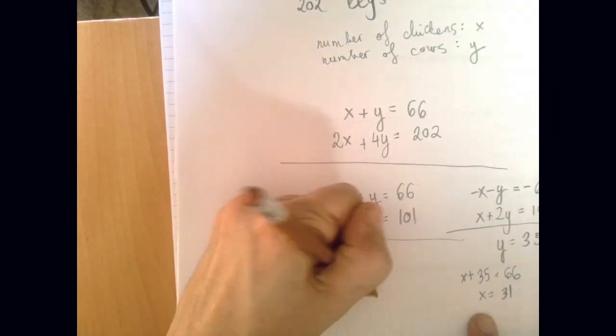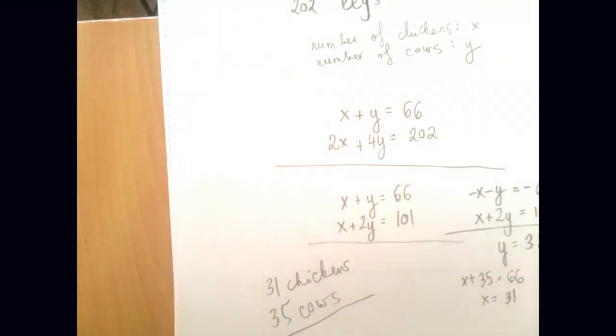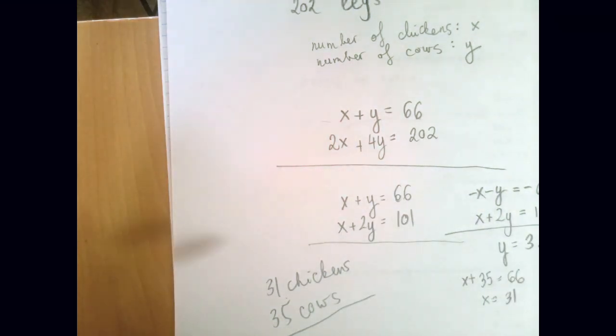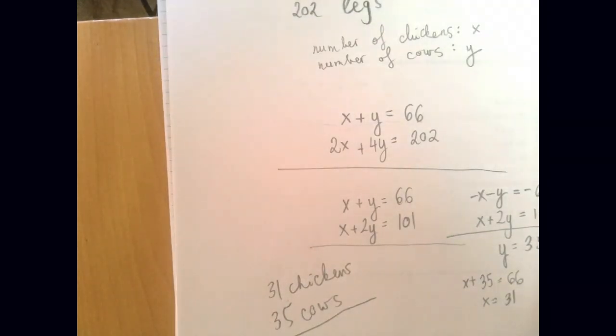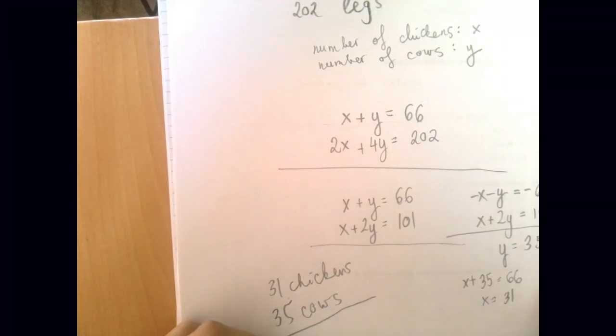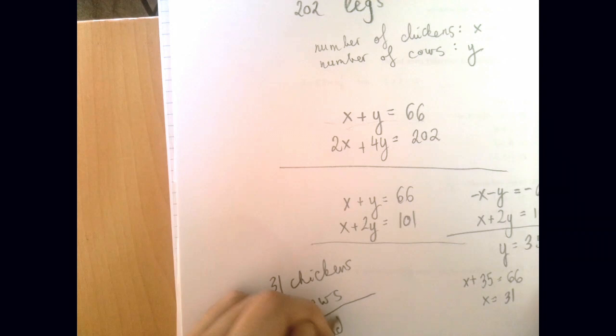Let's check. It's best to leave alone the system and just check our answer against the conditions stated in the problem. So if we have 31 chickens and 35 cows, how many heads do we have? Well, if you just add these two numbers, that's 66 heads, right? One head per animal.